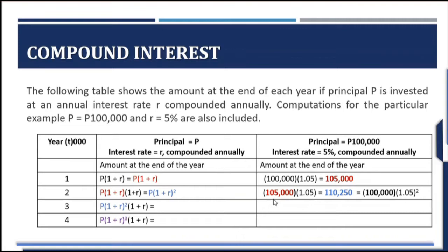On the third year, the formula becomes principal times (1 + r) raised to the third power. The amount 110,250 times 1.05 gives a result of 115,762.50. That is also the result of 100,000 times 1.05 raised to the third power, as shown in our formula.